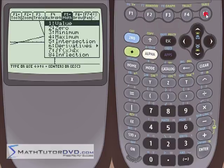So we've already dealt with a lot of these functions. What we're going to look at right now is number five, intersection. So hit number five.